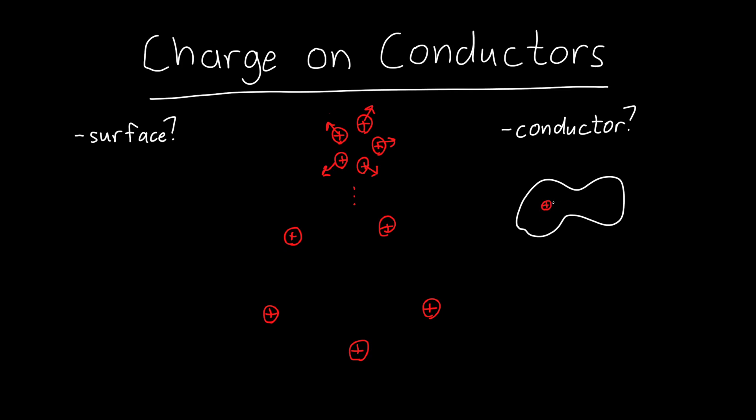So if I have a positive charge, it's free to walk around the conductor. It's free to go from here to here. Another positive charge, free to go from there to there. I might have negative charges inside. They're free to move around.